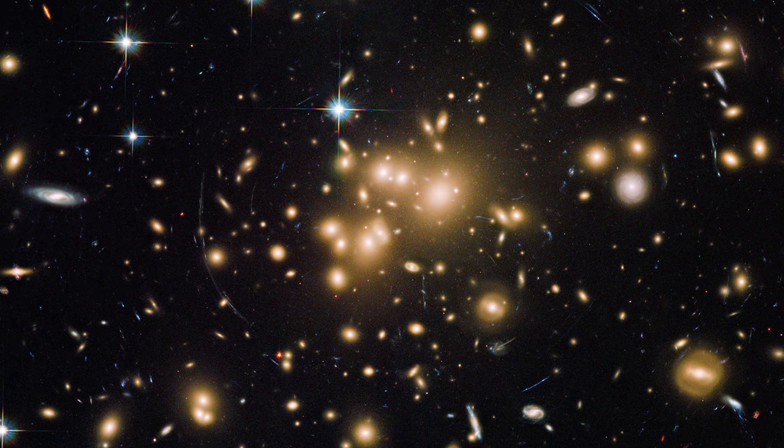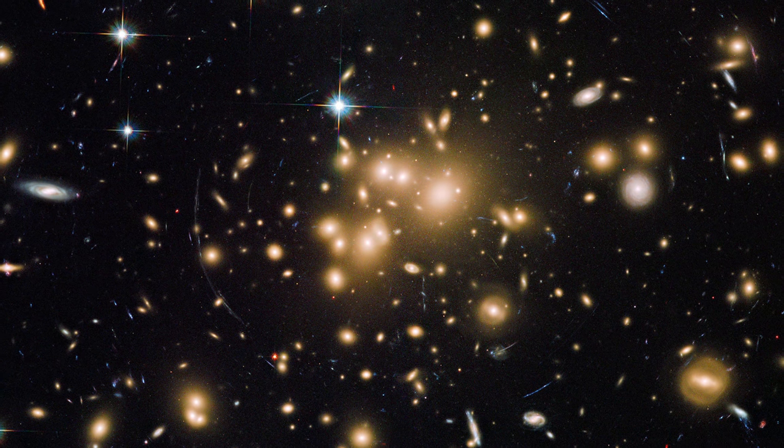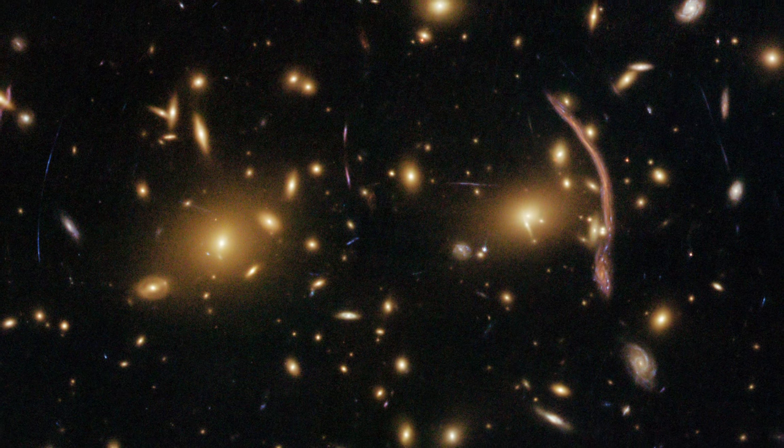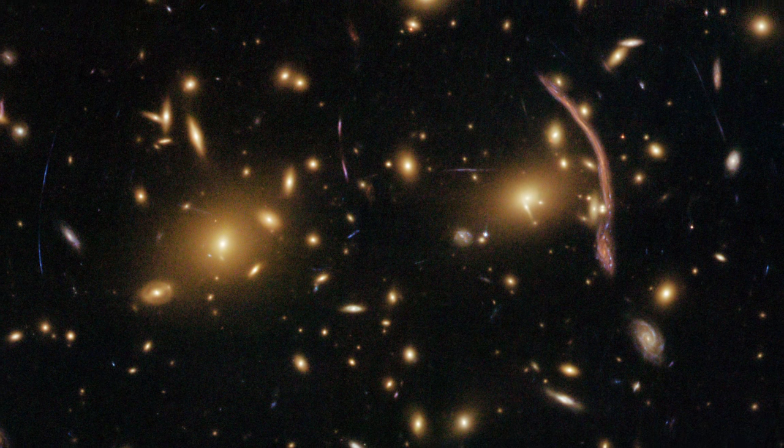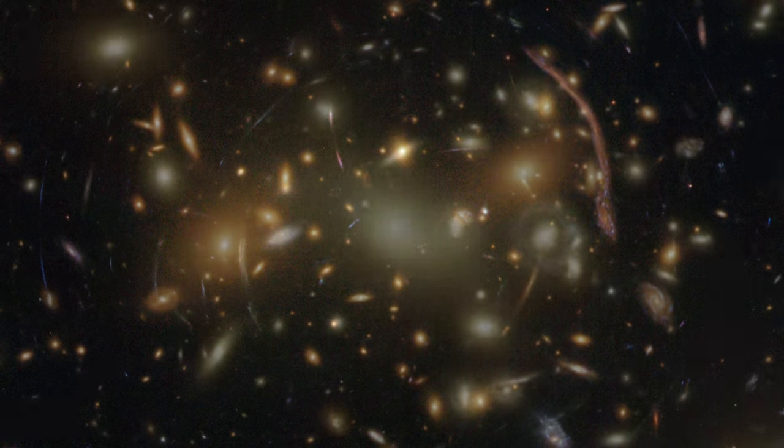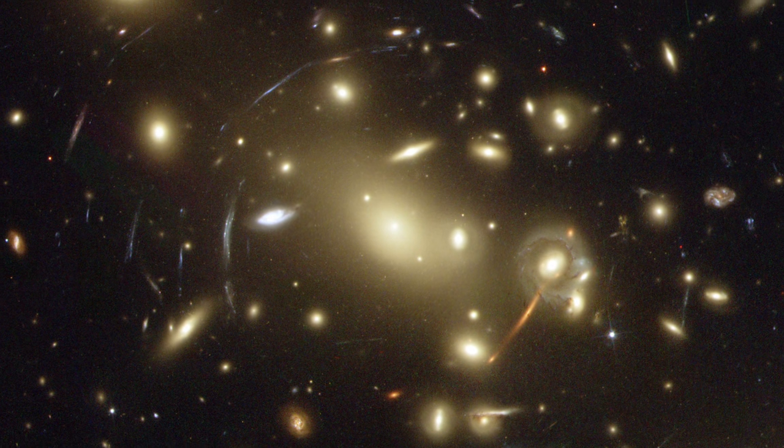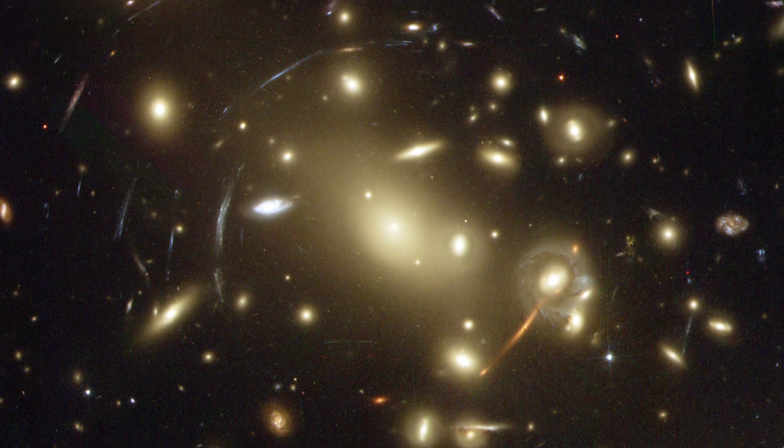Magnified by ABEL 2744, some of the most distant galaxies ever found became visible. These galaxies are so distant that the light Hubble has captured from them was emitted when the Universe was just 500 million years old. These distant galaxies, some of the first to form in the Universe, offer astronomers a glimpse of the conditions in the early Universe.